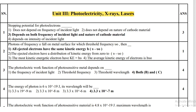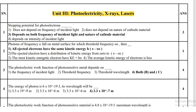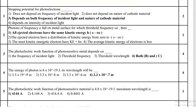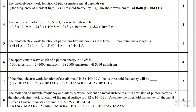For threshold frequency mu zero, all ejected photoelectrons have the same kinetic energy. Question three: the photoelectric work function of a photosensitive metal depends on the frequency of incident light and threshold wavelength.